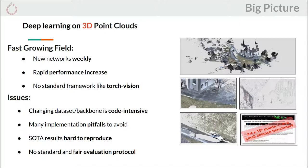3D deep learning is a fast-growing field. New networks are being added every week and the performance of the state-of-the-art is rapidly increasing. However, there is no standard framework such as TorchVision for deep learning on images. This causes several issues.